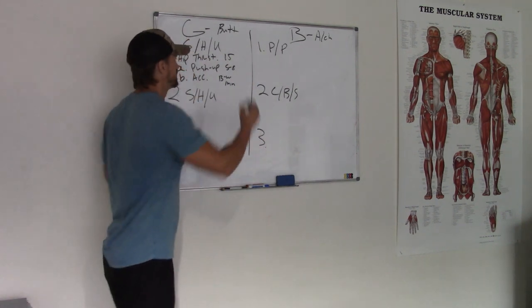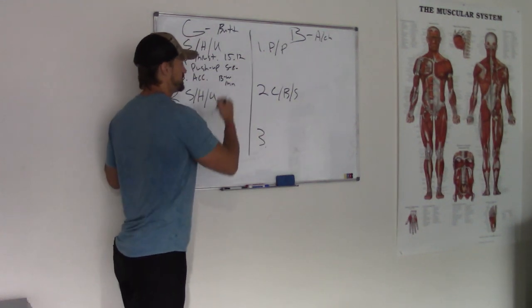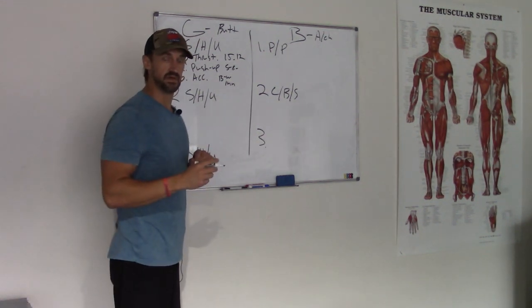Add weight. Progressive overload. Twelve reps on a hip thrust. Same thing for a push up. Same thing for the band walks. Round three.